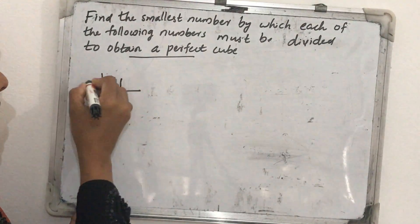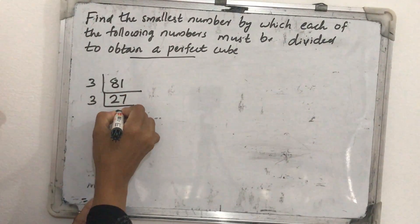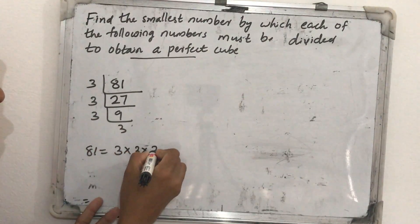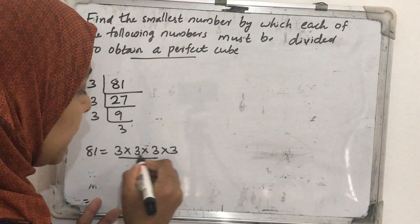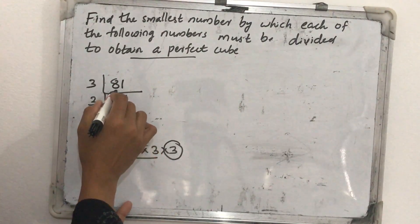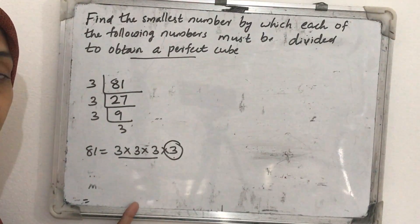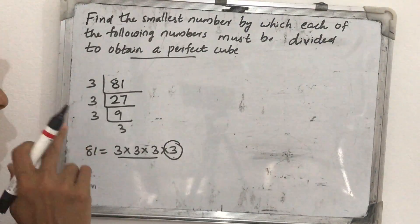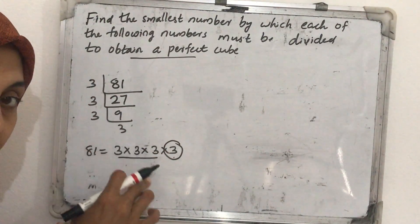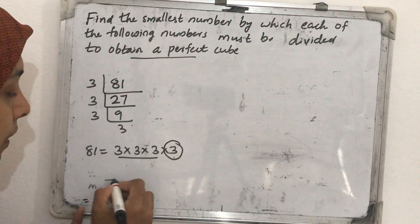We factorize 81 by dividing by 3: 81 ÷ 3 = 27, ÷ 3 = 9, ÷ 3 = 3, ÷ 3 = 1. So 81's prime factors are 3 × 3 × 3 × 3. We got one triplet already. The extra 3 is not in a triplet, so that number should be divided. We divide 81 by 3 and get 27, which we know is a perfect cube. So 81 divided by 3 gives a perfect cube.